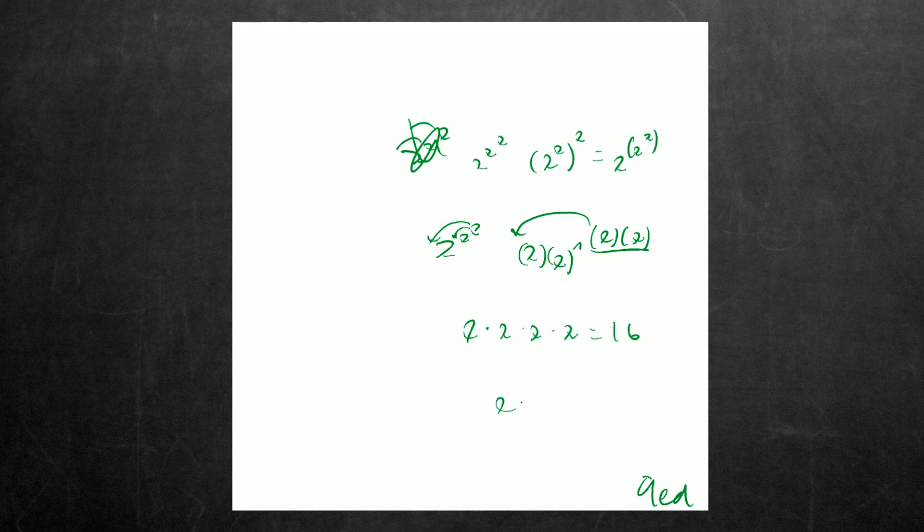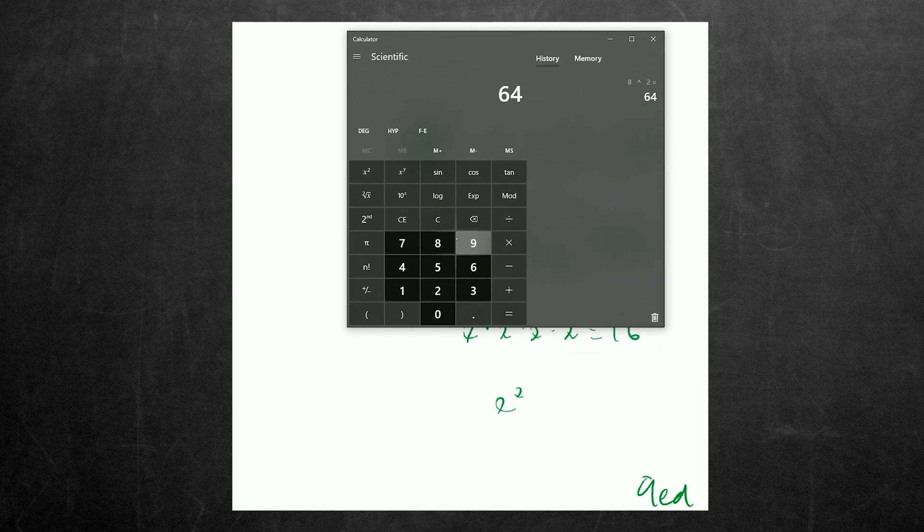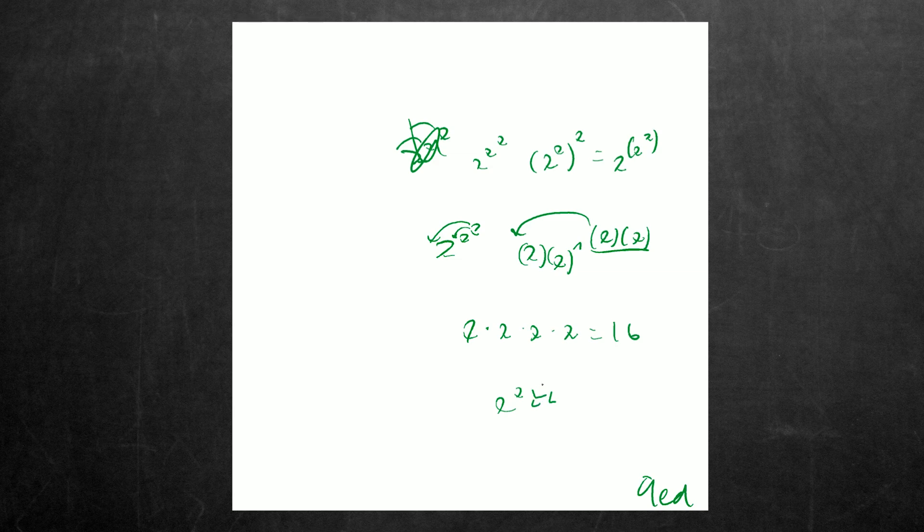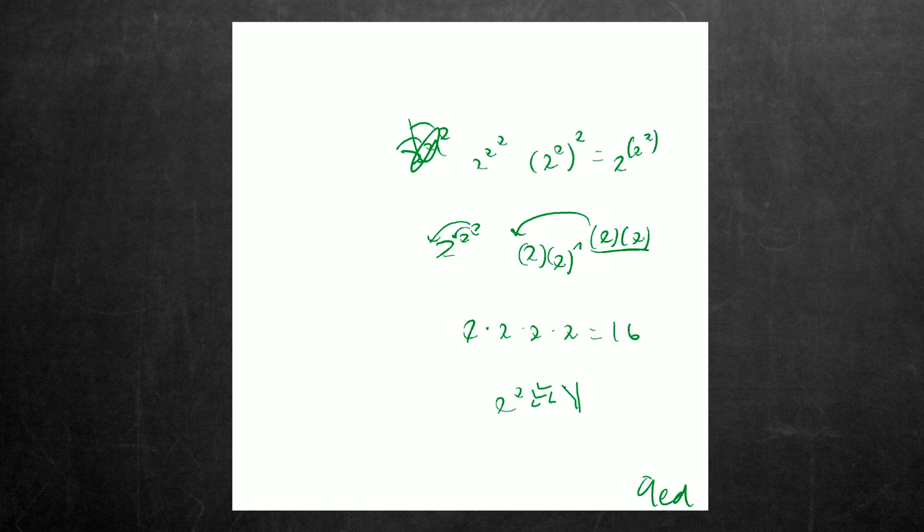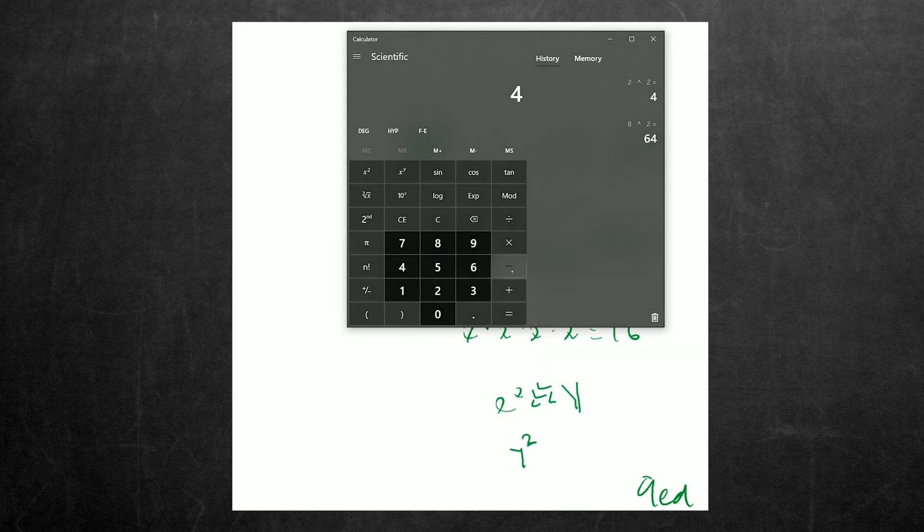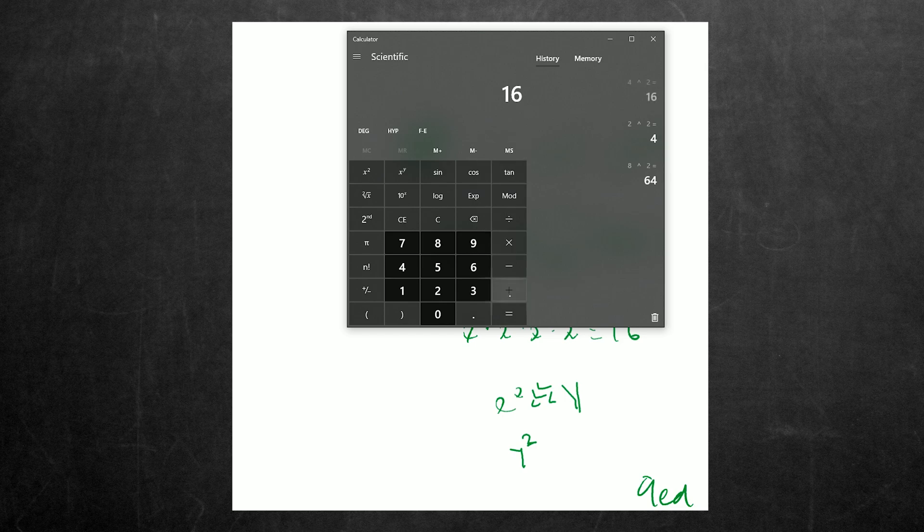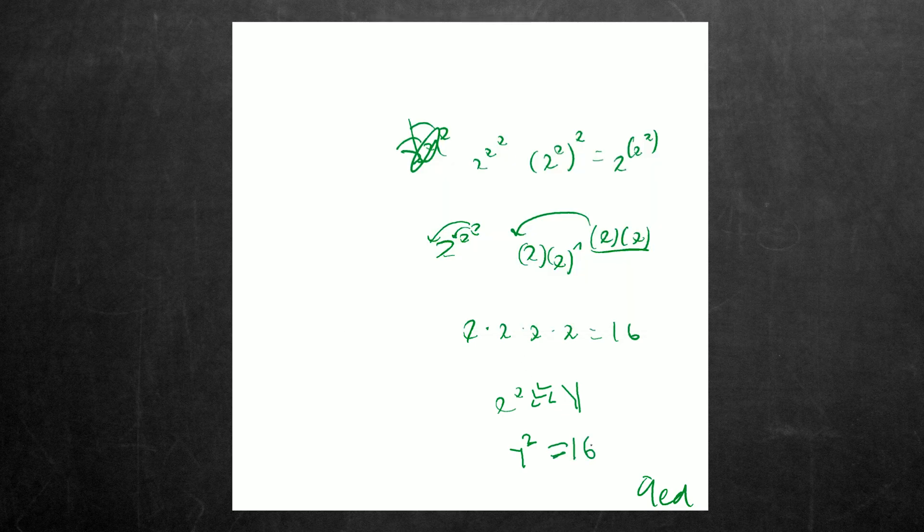And I can verify this if y'all want. So, we know that two to the second power is four. And then we know that four to the second power, pretend that's a two, is sixteen. And that's obviously equal. So, we know that the theorem worked in this instance.